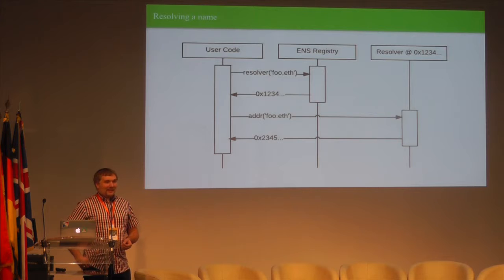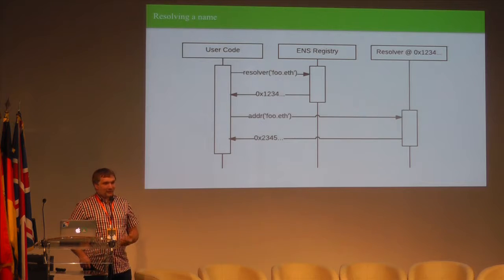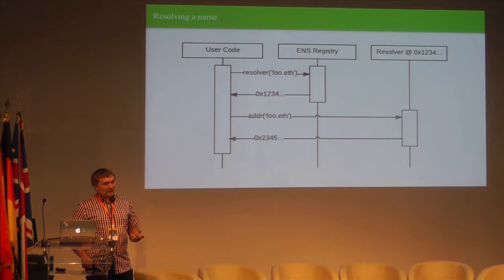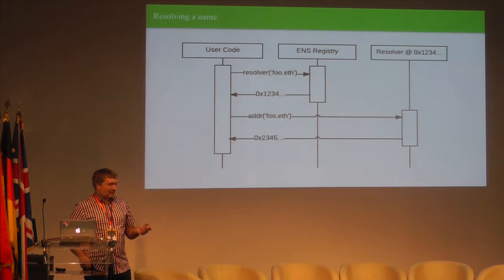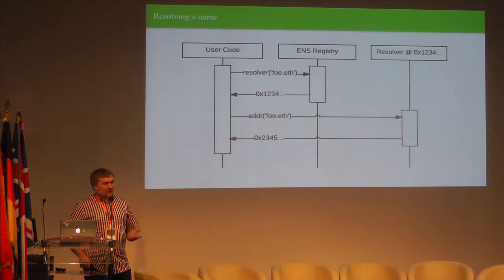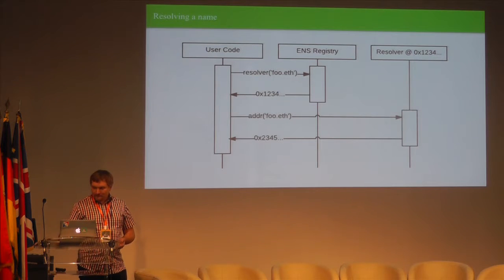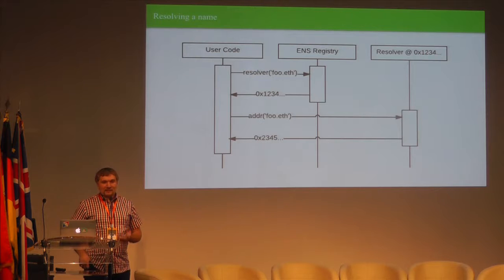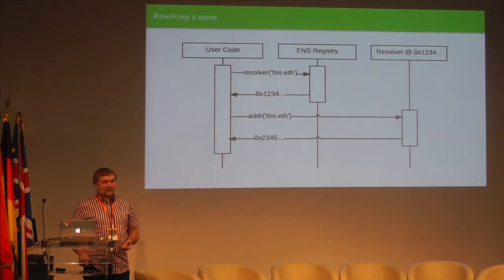Resolving a name in ENS is a two-step process. As a piece of user code running either on-chain or off-chain, I start by asking the ENS registry for the address of the resolver for foo.eth. It responds with the resolver address. Then I go and ask that resolver for the address of foo.eth, and it responds with the appropriate address. This same pattern takes place for any record type. The registry's only job is maintaining this list of resolvers and a list of owners so it knows who has permission to update the list.